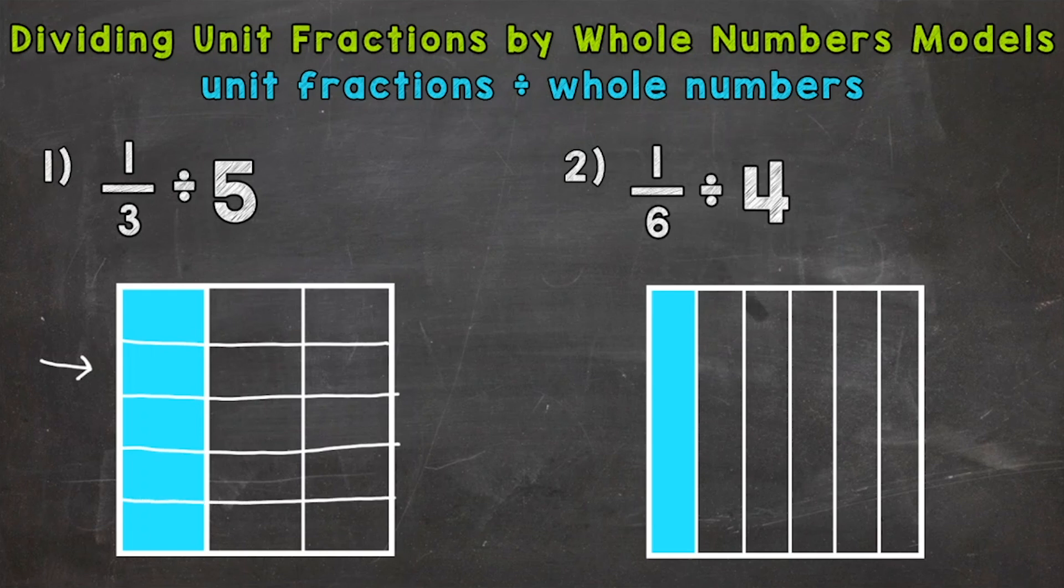So that represents 1/3 divided into 5 equal groups. Now we need to select 1 of those 5 equal groups. I find it easiest just to select the top, but it really doesn't matter what group you select.